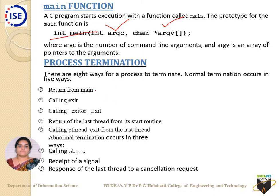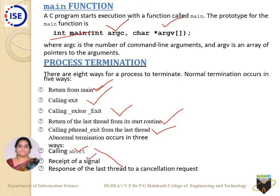There are many different ways of terminating a process. Normal terminations include: returning from the main function, calling exit, calling _exit or _EXIT, return of the last thread from its start routine, or using pthread on a POSIX system. Abnormal terminations are: calling abort, receiving a signal that stops the process, and the response of the last thread to a cancellation request.